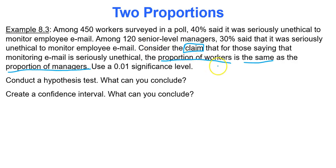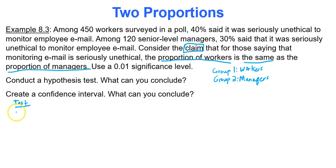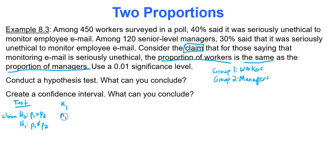First, identify group one and group two: group one is the workers and group two is the managers. For the hypothesis test, the null is always that group one's proportion equals group two's proportion — in this case that is also the claim. The alternative is that the proportions are not equal to each other. The goal is to type in the number of observations and sample size for each group into Google Sheets.